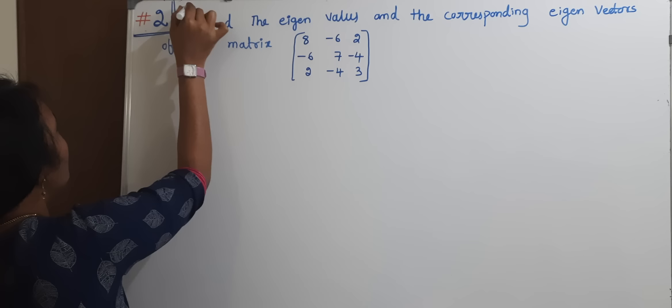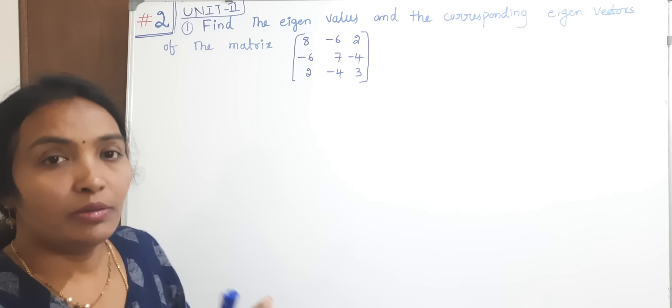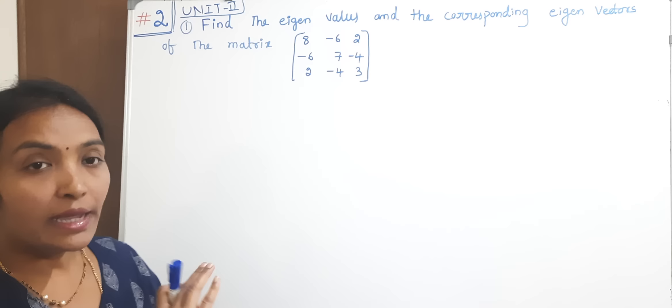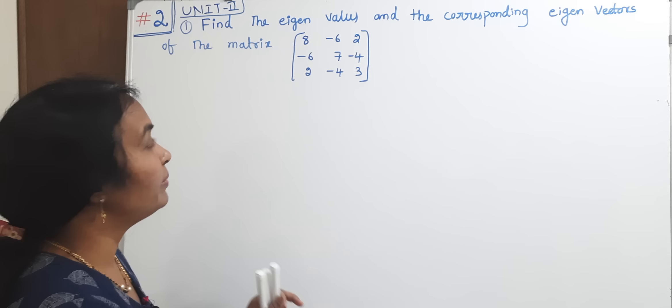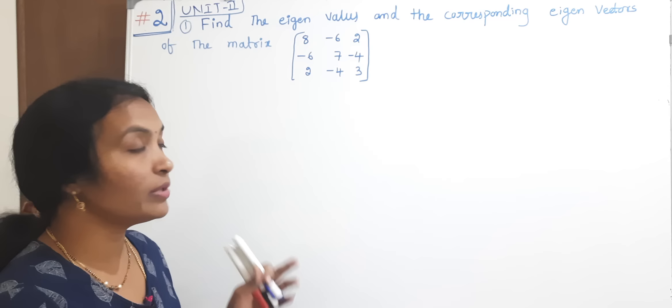Welcome back to Ramareddy Maths Academy. This is the second lecture in our matrices unit 2. In this second lecture on eigenvalues and eigenvectors, please watch the previous video first — the first problem was explained there with the concept. After taking the lambda values, I am going to apply the cross multiplication method to find eigenvectors.